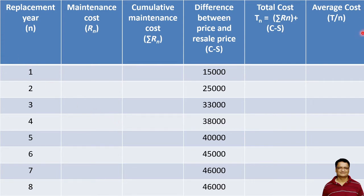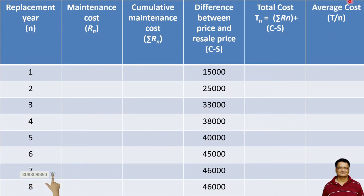In order to calculate the optimum period for replacement, we have to prepare a table. This table will have columns for: the replacement year, the maintenance cost taken from the problem statement, the cumulative maintenance cost, the difference between purchase price and resale price (C minus S) which we have computed for eight years, the total cost which is the summation of cumulative maintenance and C minus S, and the average cost which is the total cost divided by the number of years.